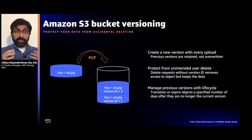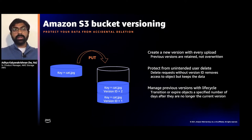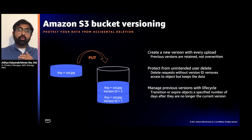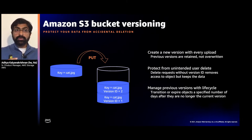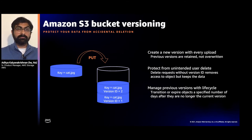Versioning also protects against unintentional deletes: when you issue a delete, S3 places a delete marker to make the object appear gone, but an administrator with proper permissions can remove that marker to restore access to the data. You can also use lifecycle policies and rules to manage the stack of versions built over time — expiring versions or transitioning them to a more cost-effective storage class depending on your needs.